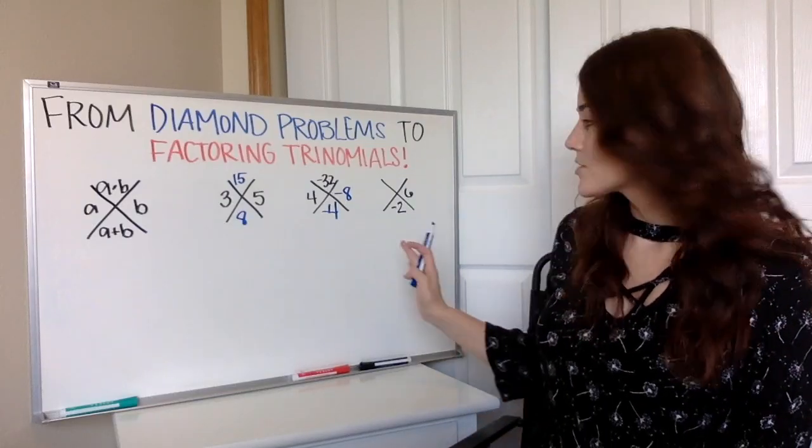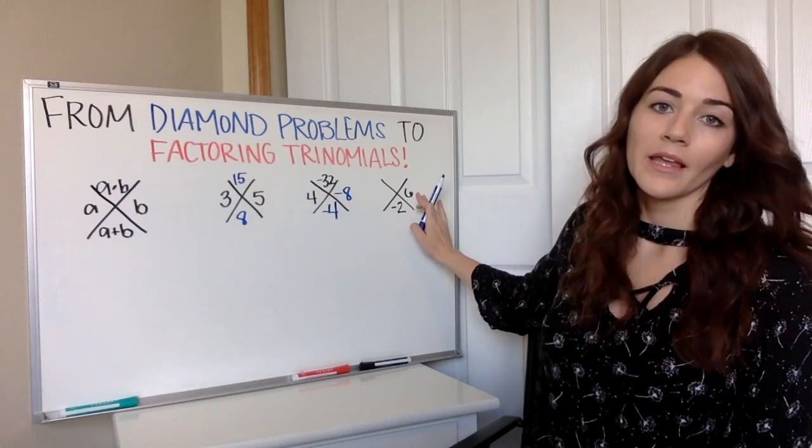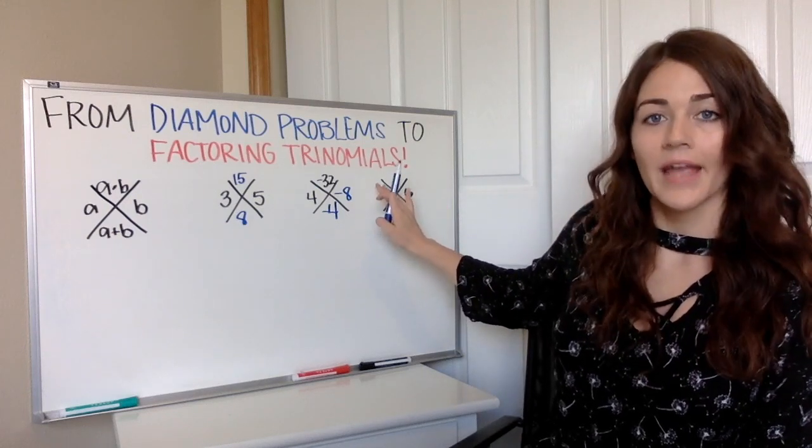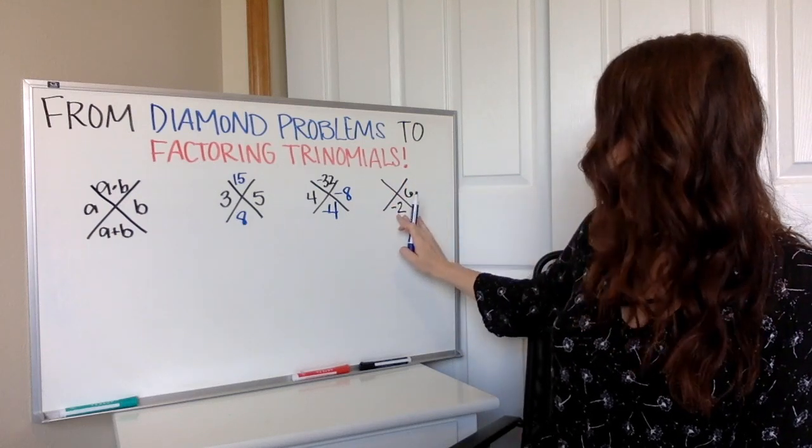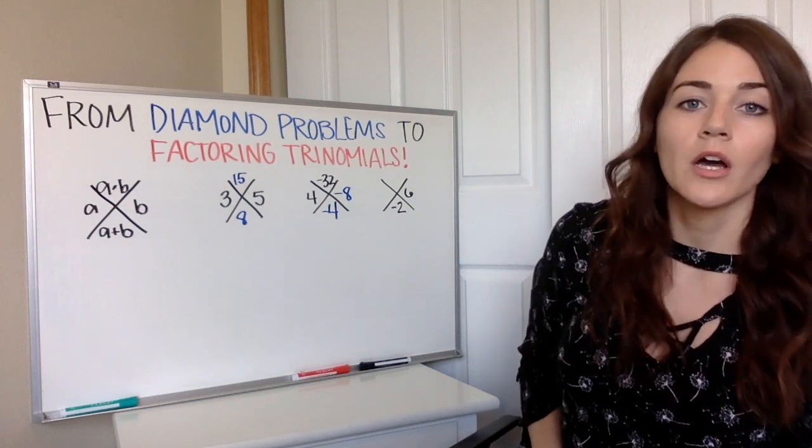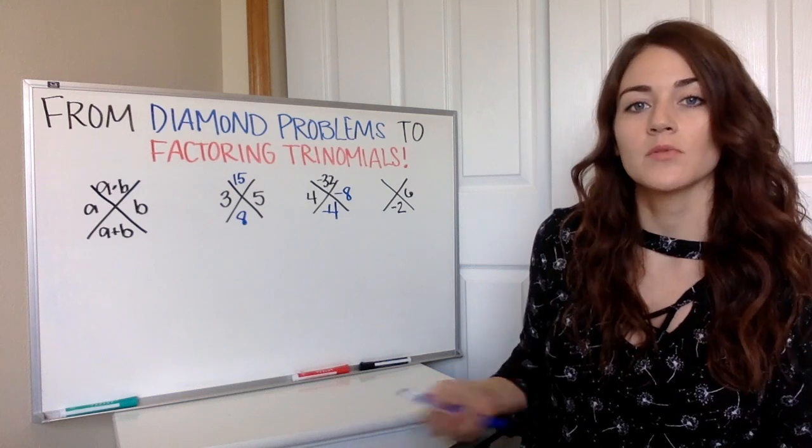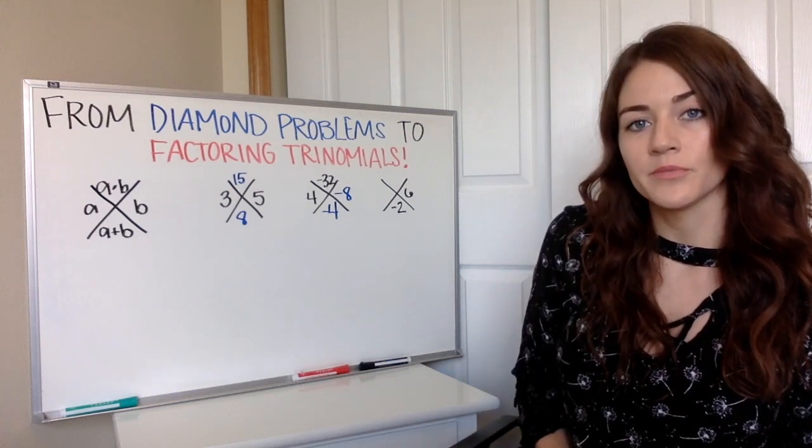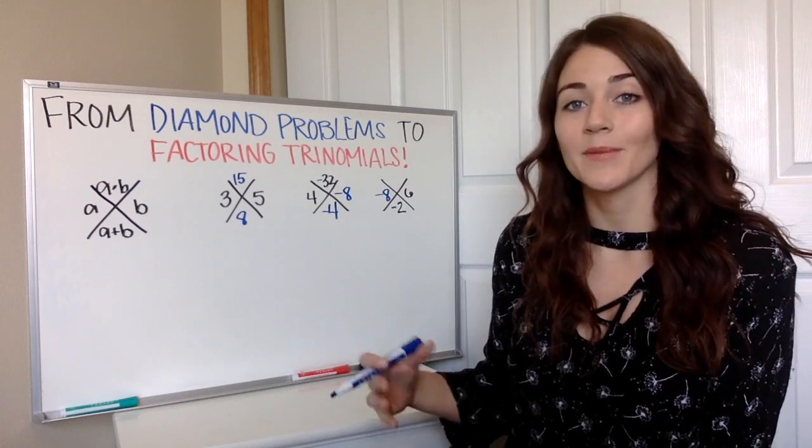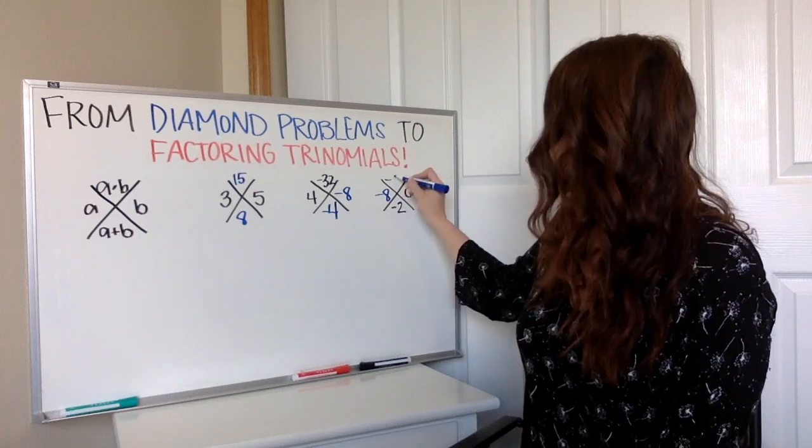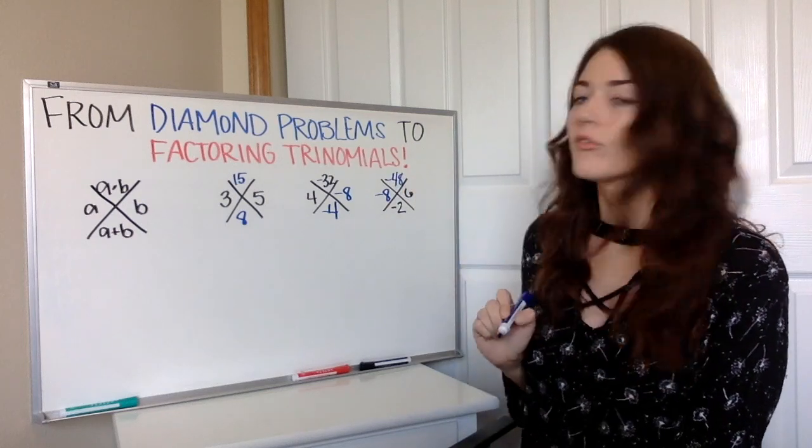And again, this next one they give us b but they do not give us a. So we're going to have to find that by using the knowledge that we know they're going to add to be negative two. So six plus what gets me negative two? Then negative eight times six, we're going to get our last one of negative 48.